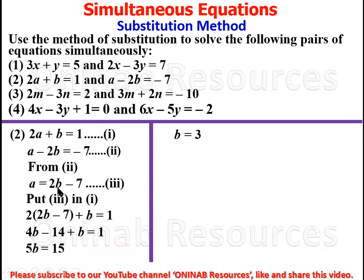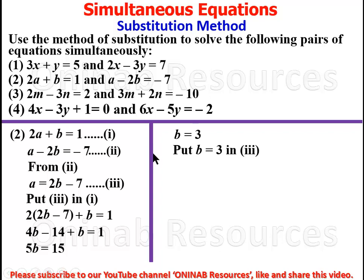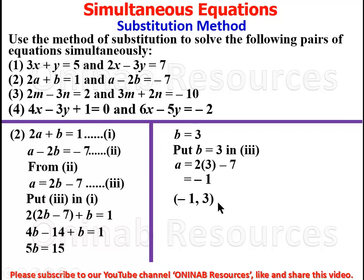Now we substitute b = 3 into equation three to find a. We have a = 2(3) - 7 = 6 - 7 = -1. So a = -1. In coordinate form (a, b) the solution is (-1, 3).